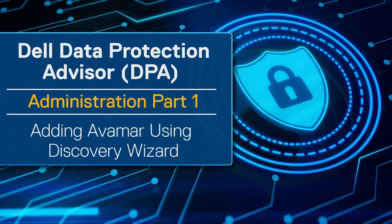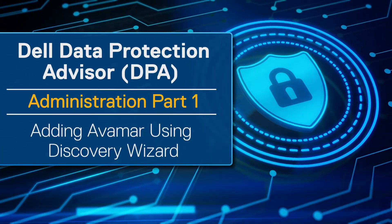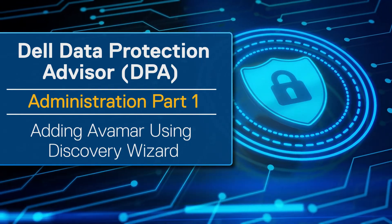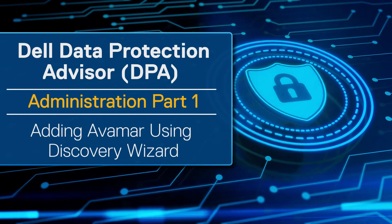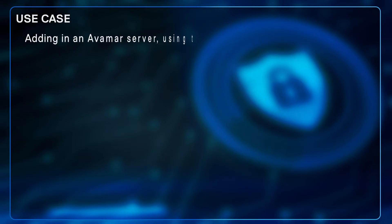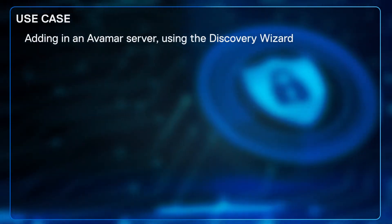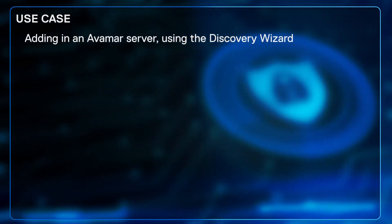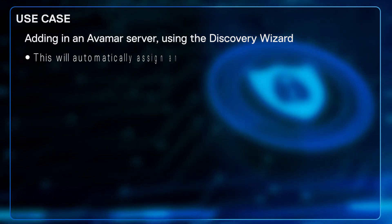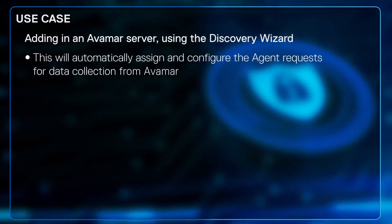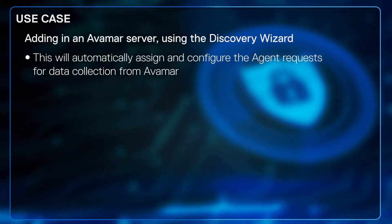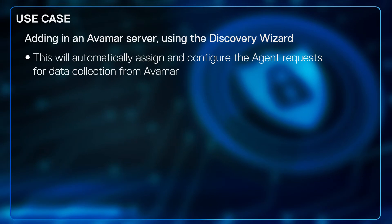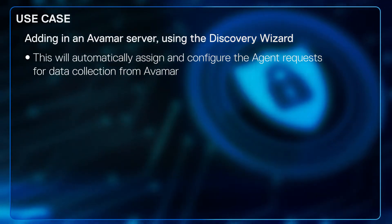In this section I'd like to cover some DPA administration, specifically adding an AVAMAR server using the data collection wizard. The use case is adding an AVAMAR server or an AVE to the DPA UI using the discovery wizard, which will automatically assign and configure the agent requests for data collection from AVAMAR. The agent requests dictate the type of data and how often it should collect.